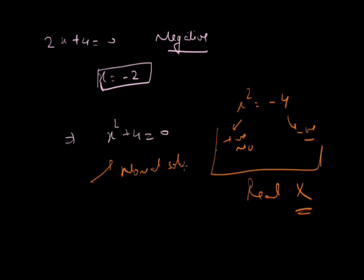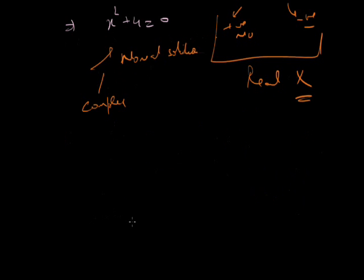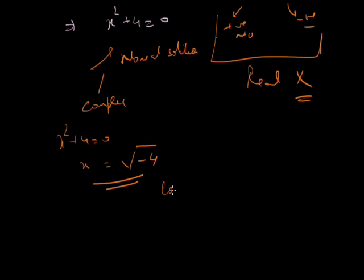But someone asked: what kind of solution does it have? We can say it has a complex solution. It does not have a real solution, but it can have a complex solution. The solution for the equation x squared plus 4 equal to 0 is x equal to the square root of minus 4, and this is called the complex solution.